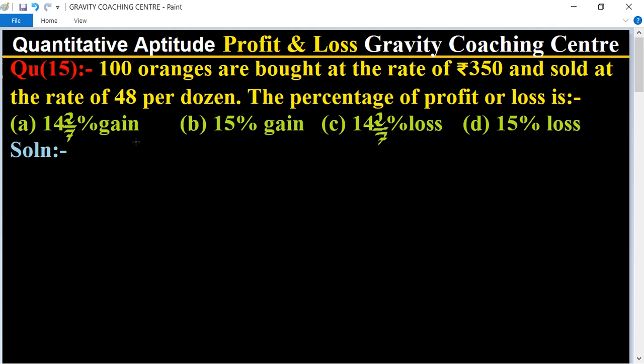In this question, the cost price of 100 oranges equals rupees 350, and SP of one dozen, means 12 oranges, equals rupees 48.